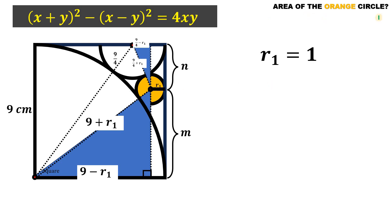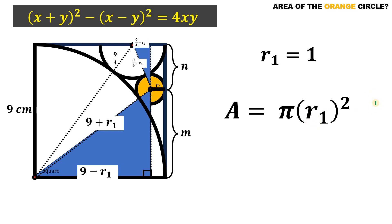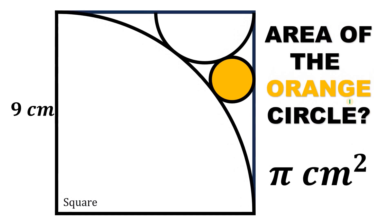The area of this orange circle equals π · R₁². Since R₁ = 1, and 1² = 1, the area of this orange circle is simply π square centimeters. Given this figure, the area of the orange circle equals π square centimeters. And as always, we are done.